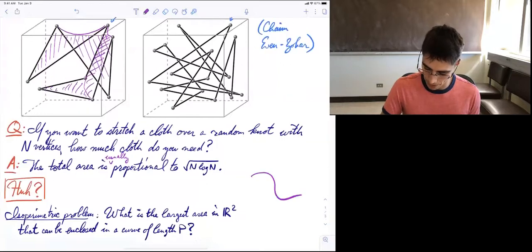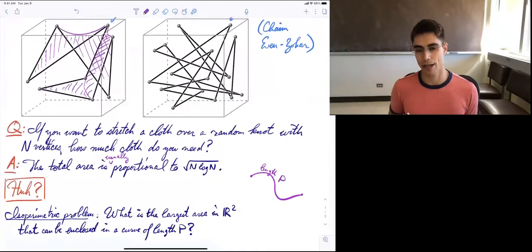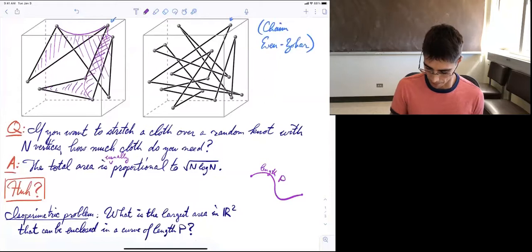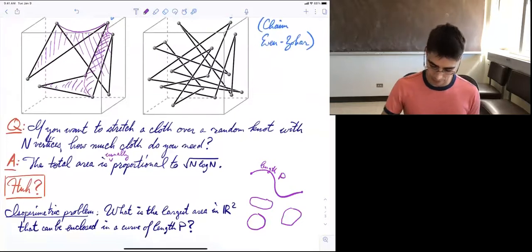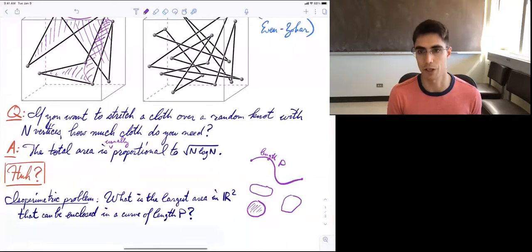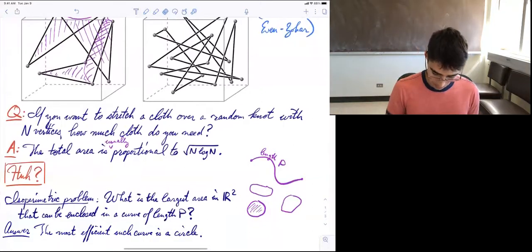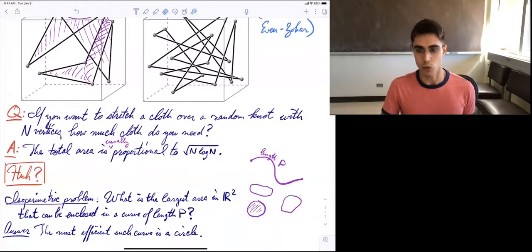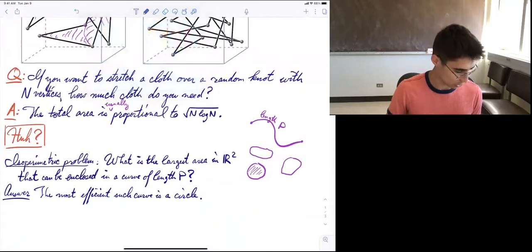But the problem is just take the plane and take a curve, take a string of length p, and try to enclose the biggest possible area with it. You can make different shapes with your string. How do you enclose area in the most efficient possible way?